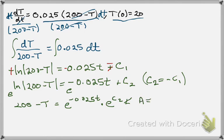So A essentially equals e to the C2. So that's going to be our nice absorbed constant, making this thing just a little bit easier to deal with, and what we get is 200 minus T equals A times e to the minus 0.025T.